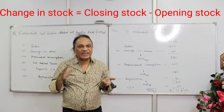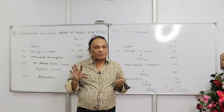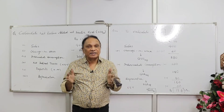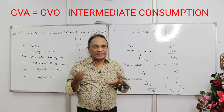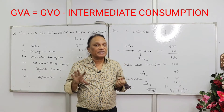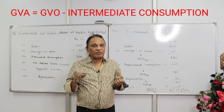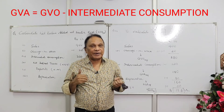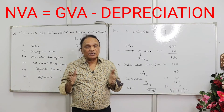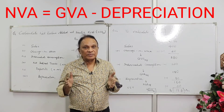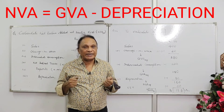Sales plus change in stock gives gross value of output. If you subtract intermediate consumption expenditure you get gross value added at market price — GVA at MP. You always get it at market price, don't forget it. From gross value added at market price, if you subtract depreciation (also called consumption of fixed capital), the gross value becomes net value — NVA at MP, net value added at market price.